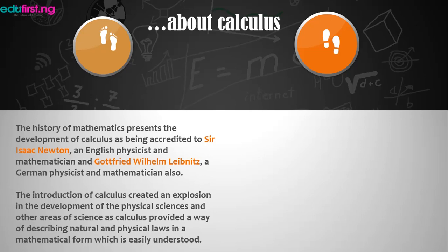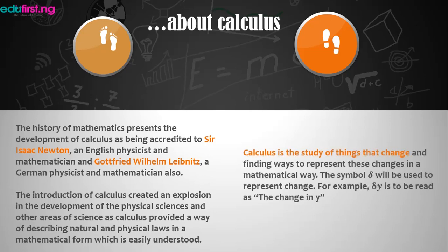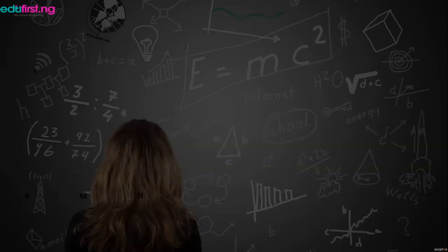If we are to define what calculus is, we say calculus is the study of things that change. Changes occur in nature, and when we find ways to represent these changes in a mathematical form, that is the aim. The symbol delta will be used to represent change — so for example, delta y is to be read as 'the change in y'.